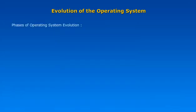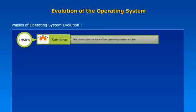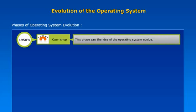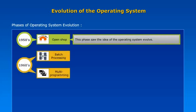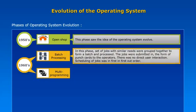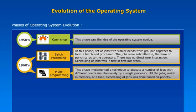In the 1950s, the open shop phase saw the idea of the operating system evolve. The 1960s saw batch processing and multi-programming evolve. In batch processing, sets of jobs with similar needs were grouped and processed together via punch cards with no direct user interaction, scheduled in first-in-first-out order. Multi-programming implemented a technique to execute multiple jobs with different needs simultaneously using a single processor, with all jobs residing in memory at once and scheduling based on priority.